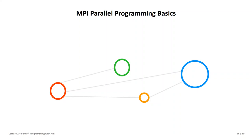Welcome back to High Performance Computing, Part 2 of Lecture 2 on Parallel Programming with MPI. The first part of the lecture was considering scientific applications and the reasoning why we go for parallel computing.